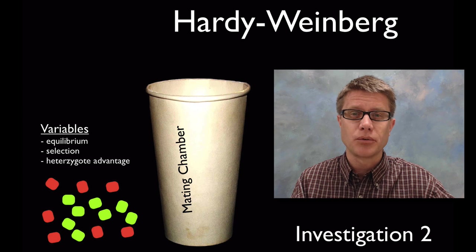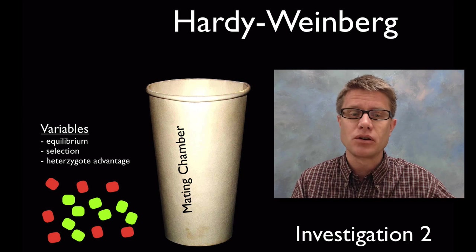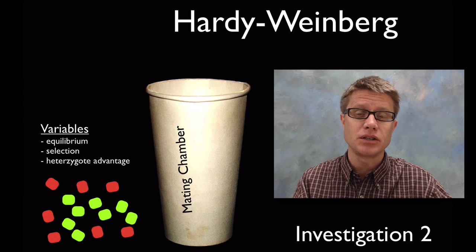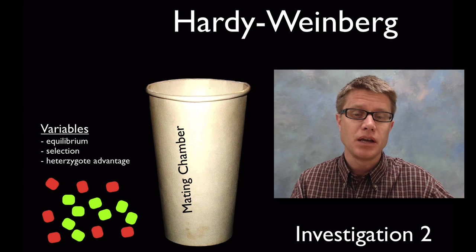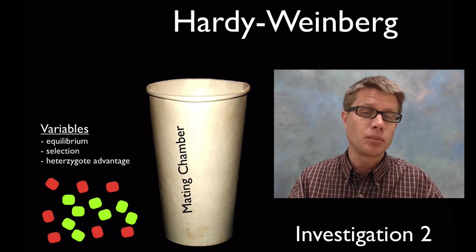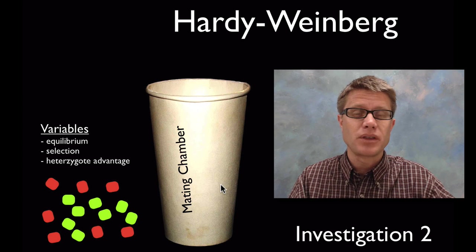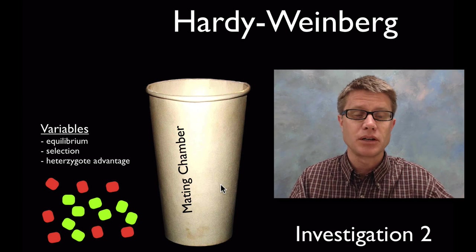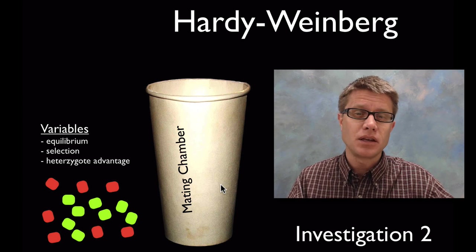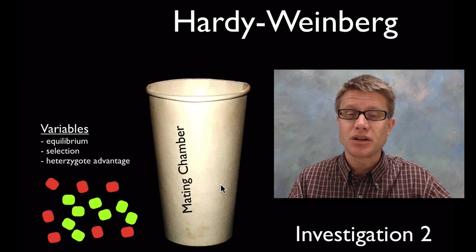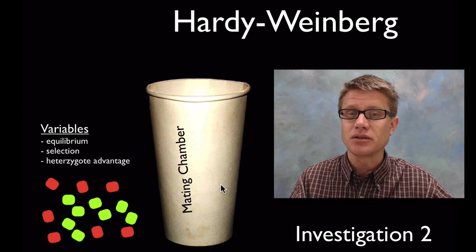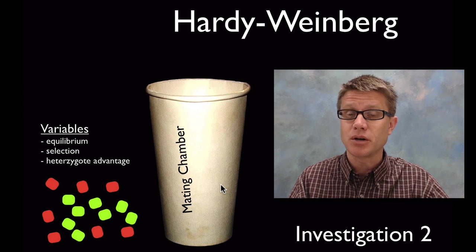Investigation two is on Hardy-Weinberg equilibrium. In my classroom we started with a bead lab where you'd put 50 of each, two different colors of beads in a cup. You shake that cup and pull out two pairs at a time. We call that the mating chamber, or simulating sex in this population. What you'll find is that the equilibrium will remain the same. That's what equilibrium means. The P and Q values are going to remain the same throughout the whole experiment.